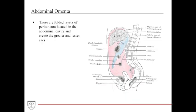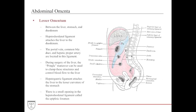The abdominal omenta are folded layers of peritoneum in the abdominal cavity that create the greater and lesser sacs. The lesser omentum is a smaller structure contained between the liver and the stomach, involving the medial portion of the duodenum. It is bordered by the hepatoduodenal ligament, which attaches from the liver to the duodenum and contains the portal vein, the common bile duct, and the hepatic proper artery.